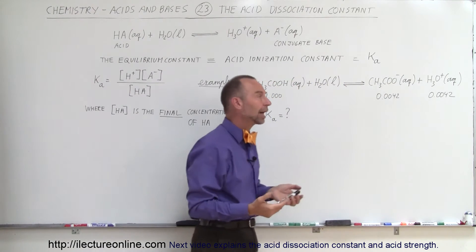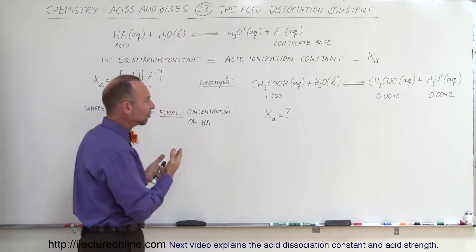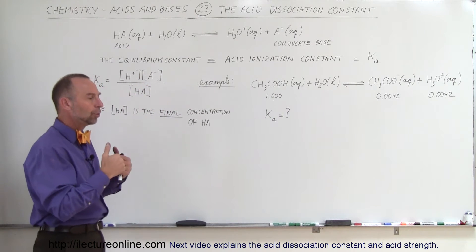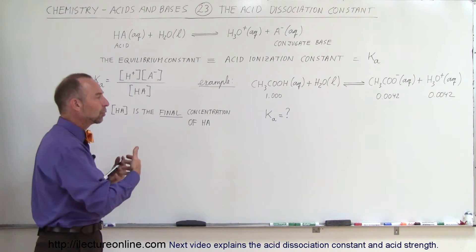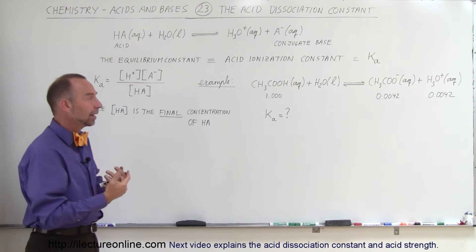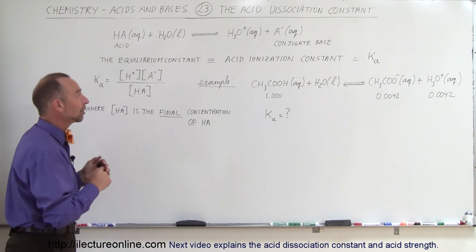And so, what we call the acid dissociation constant will be able to give us a picture into how much the acid will dissociate into the hydrogen ion and its conjugate base.